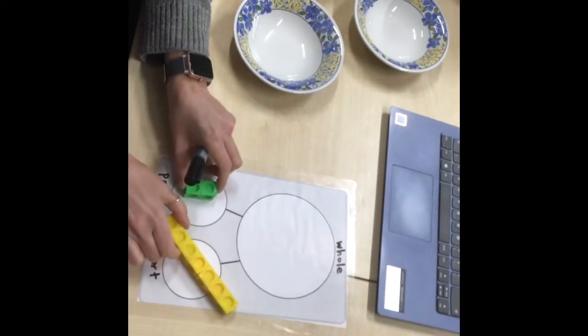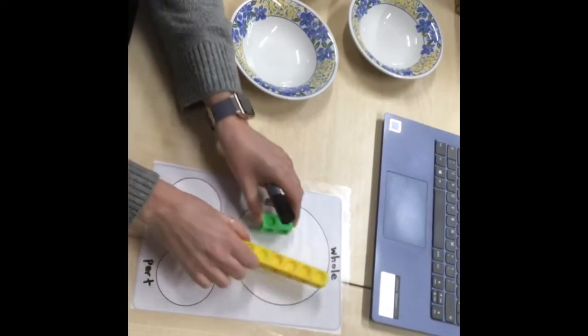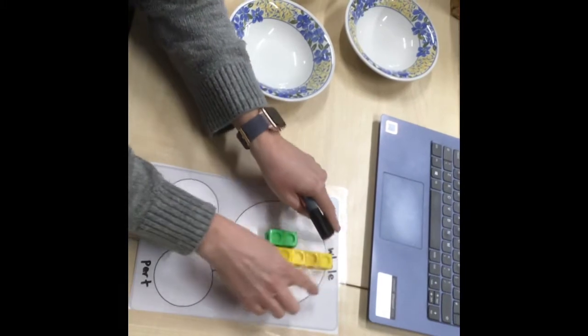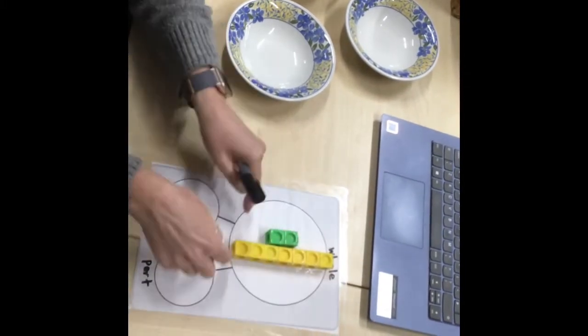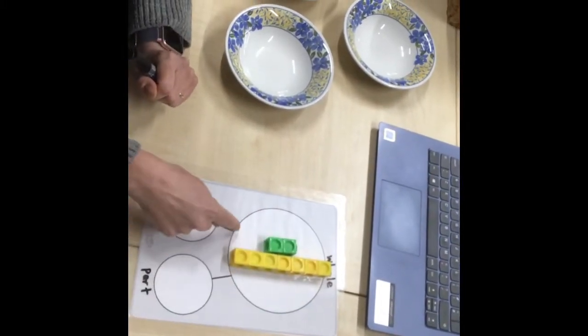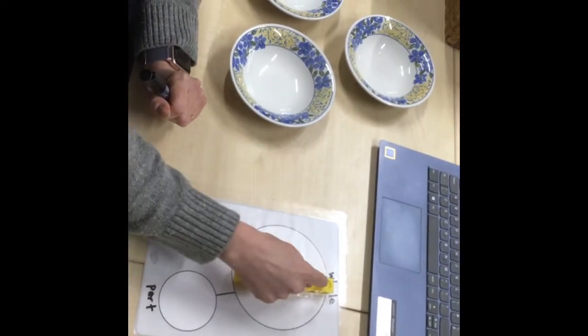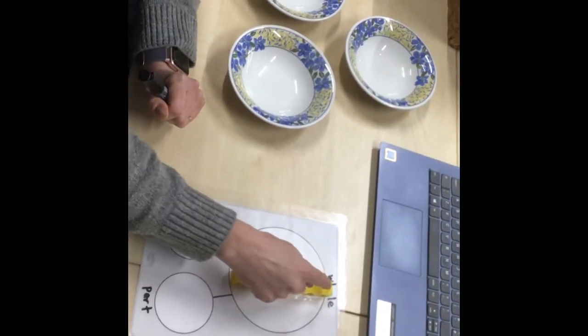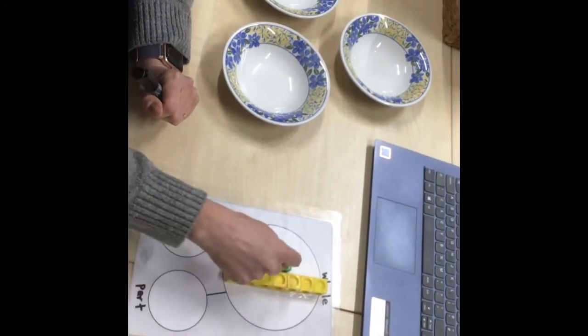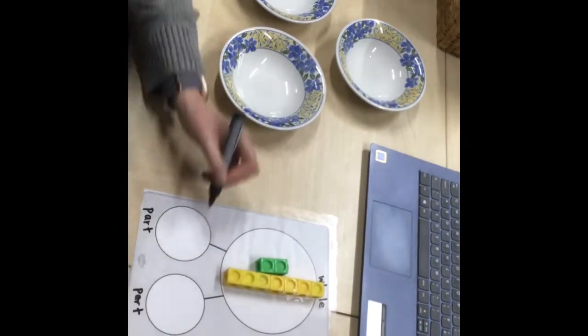If I wanted to add them together, I'm going to move them to the whole because this is the whole number. And then how many have I got now? I'm going to count up from the big number because we know, don't we, that's the quickest way to do this. So I've got seven, eight, nine.